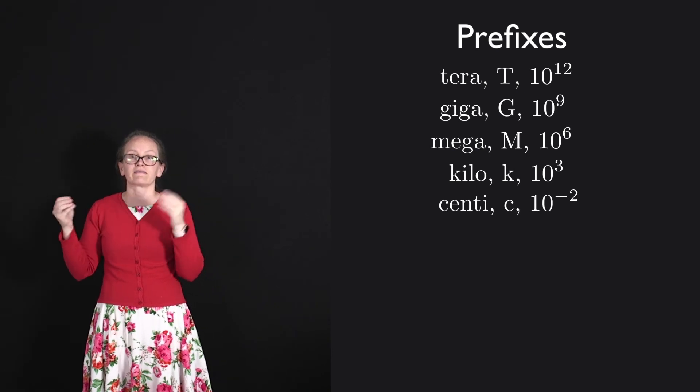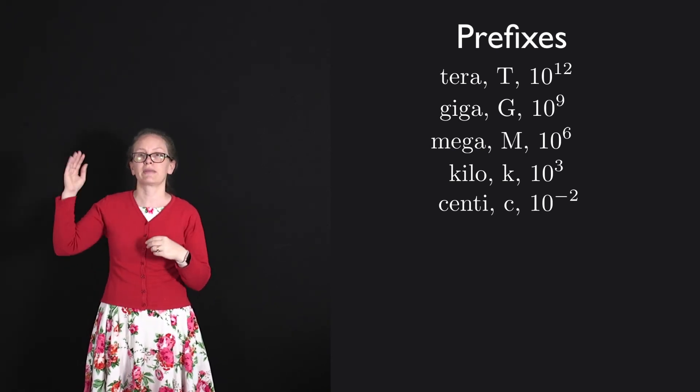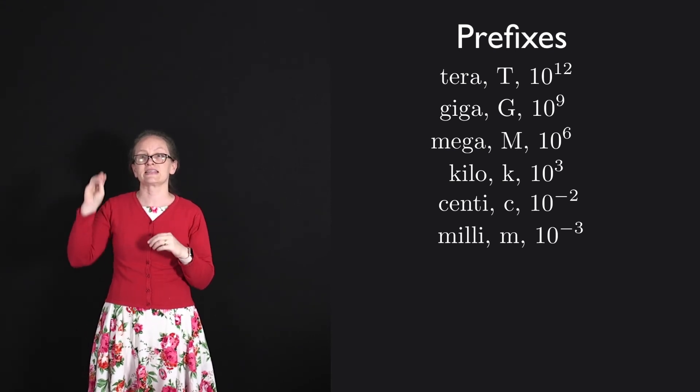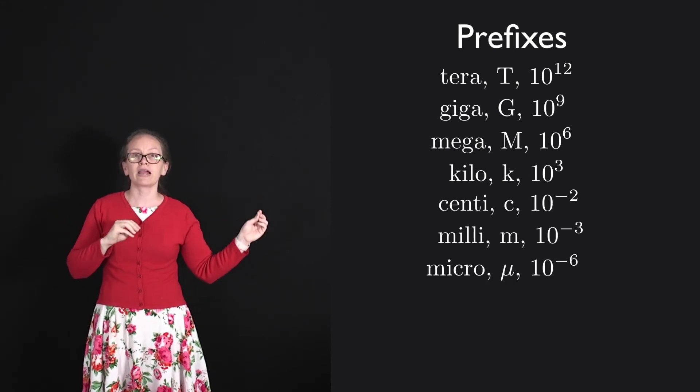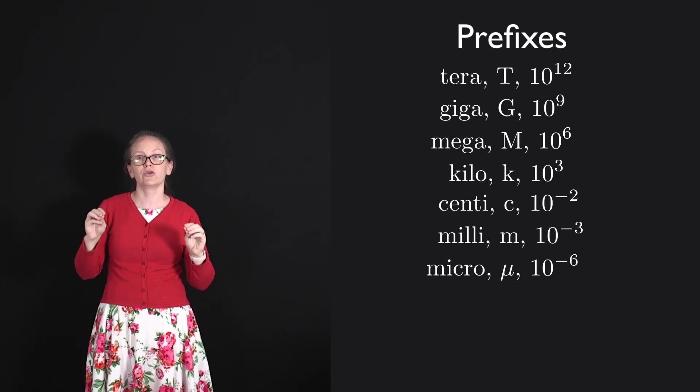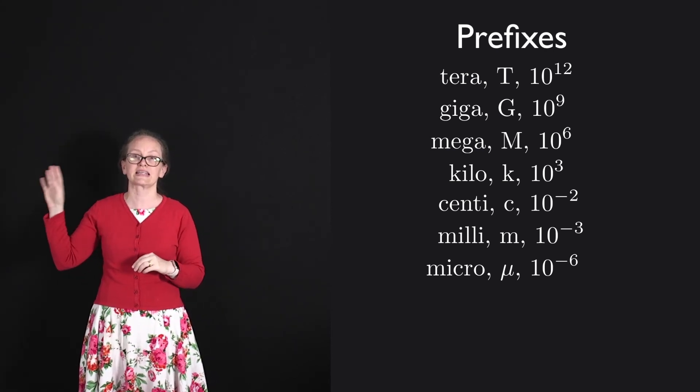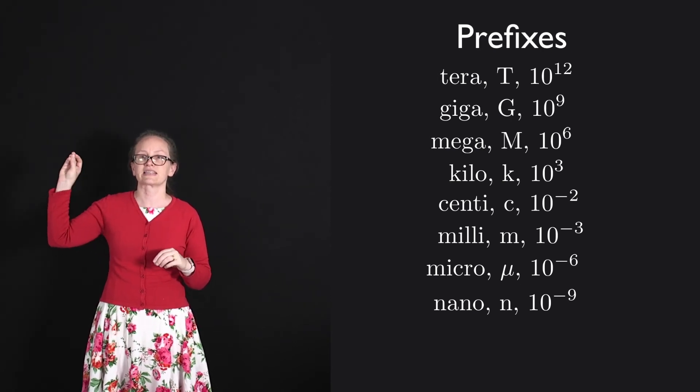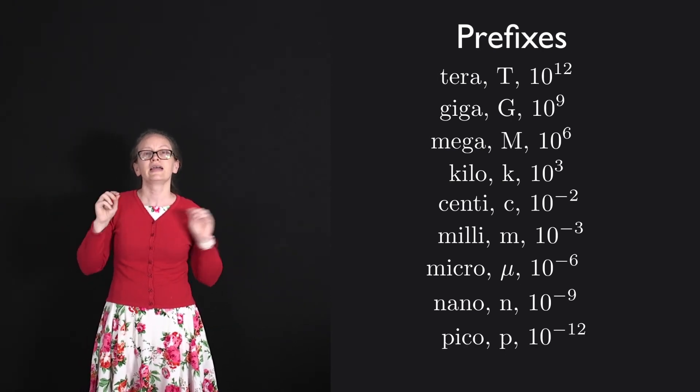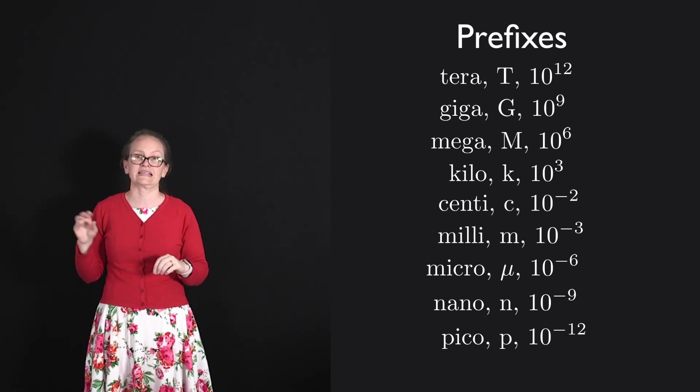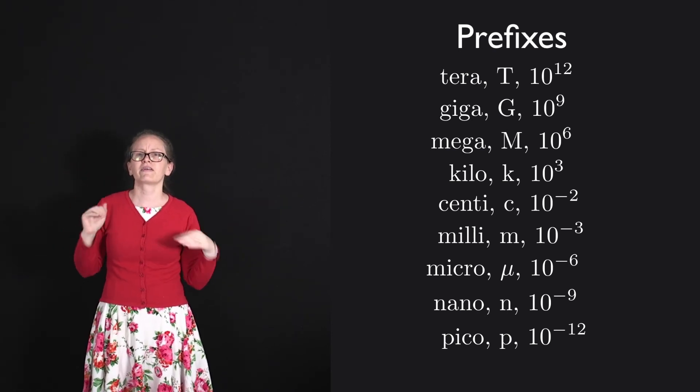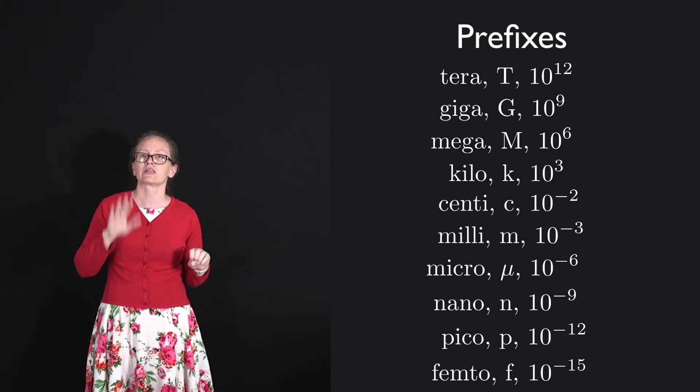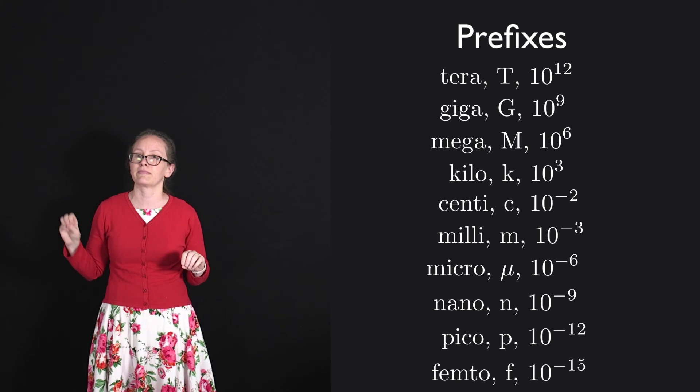Centi has a lowercase c, which is 10 to the minus 2. Milli has a lowercase m, and it is 10 to the minus 3. Micro has the Greek letter mu, and it is 10 to the minus 6. Nano has lowercase n, and it is 10 to the minus 9. Pico is a lowercase p, and it is 10 to the minus 12. Very occasionally you might see femto as well. Femto is lowercase f, and it is 10 to the minus 15.